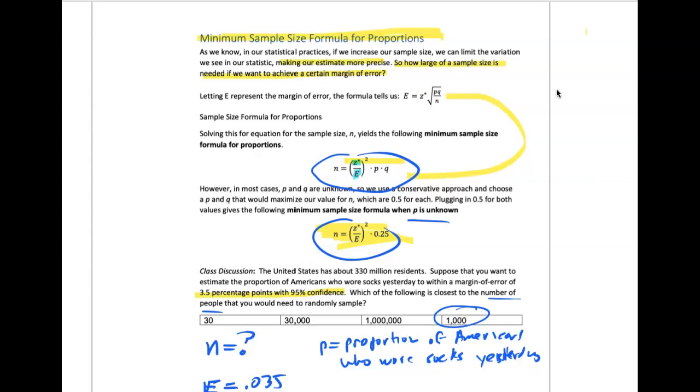The way we do that is we connect the idea of the smallest sample size needed for a certain margin of error. Because researchers want to be confident with their results, they might say 'I want to be 95% confident.' To be 95% confident, you can work backwards and determine how many people you need to include in your sample.